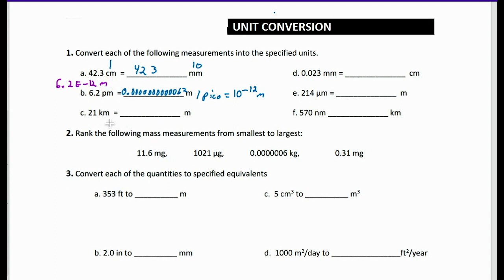Next we have 21 kilometers — how many meters is that equivalent to? We know that 1 kilometer equals 1,000 meters, so all we're going to do is take this number and multiply it by 1,000. That gives us 21,000 meters.